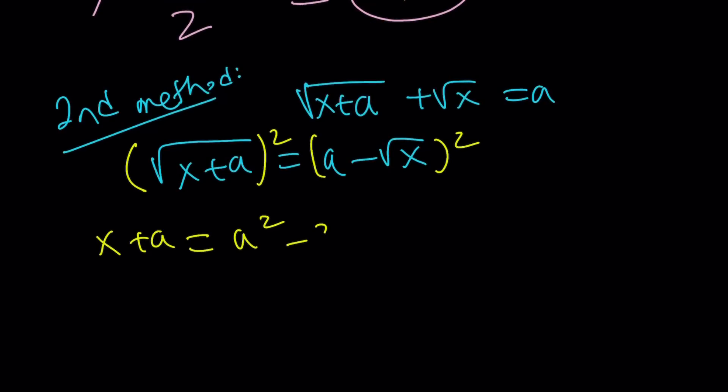Get rid of some of the radicals. a squared minus 2a root x plus x. x cancels out. And we get something nice, roughly.